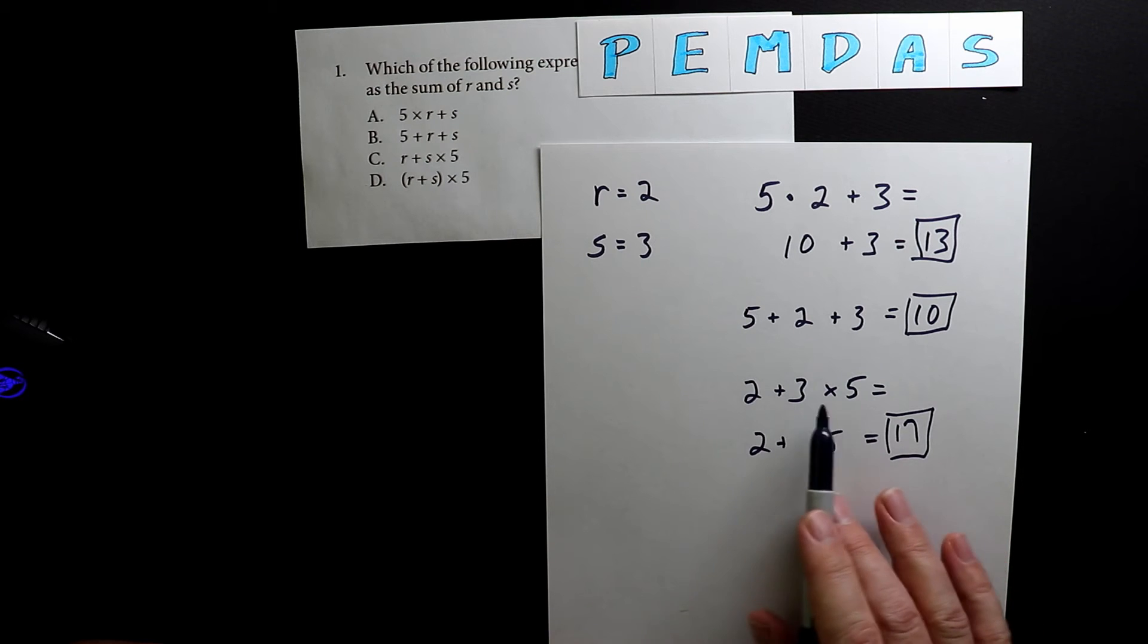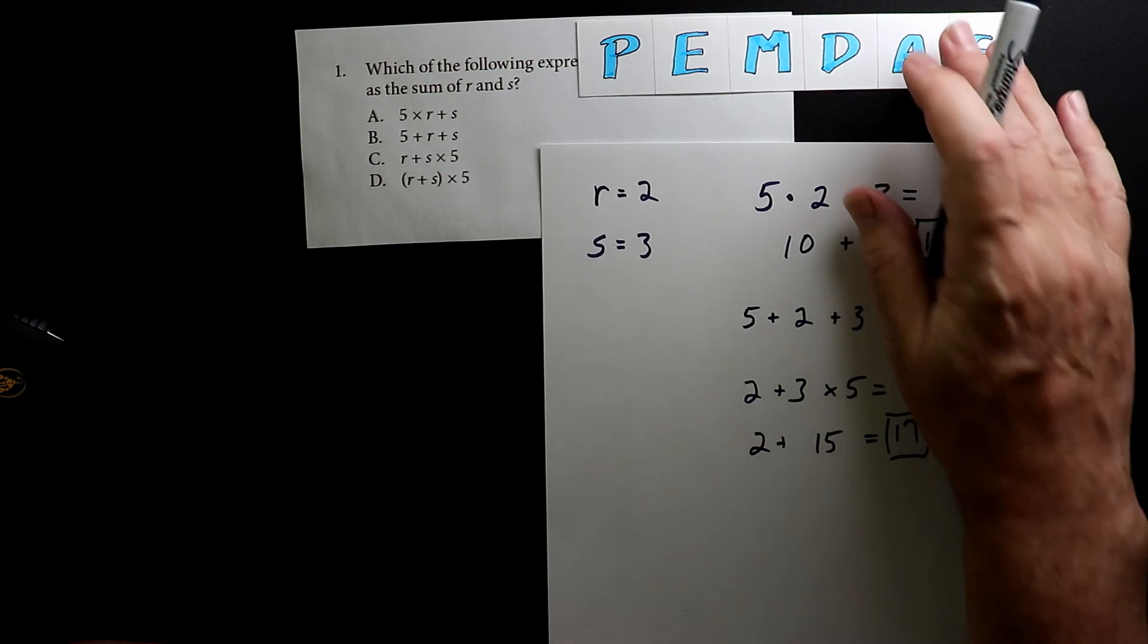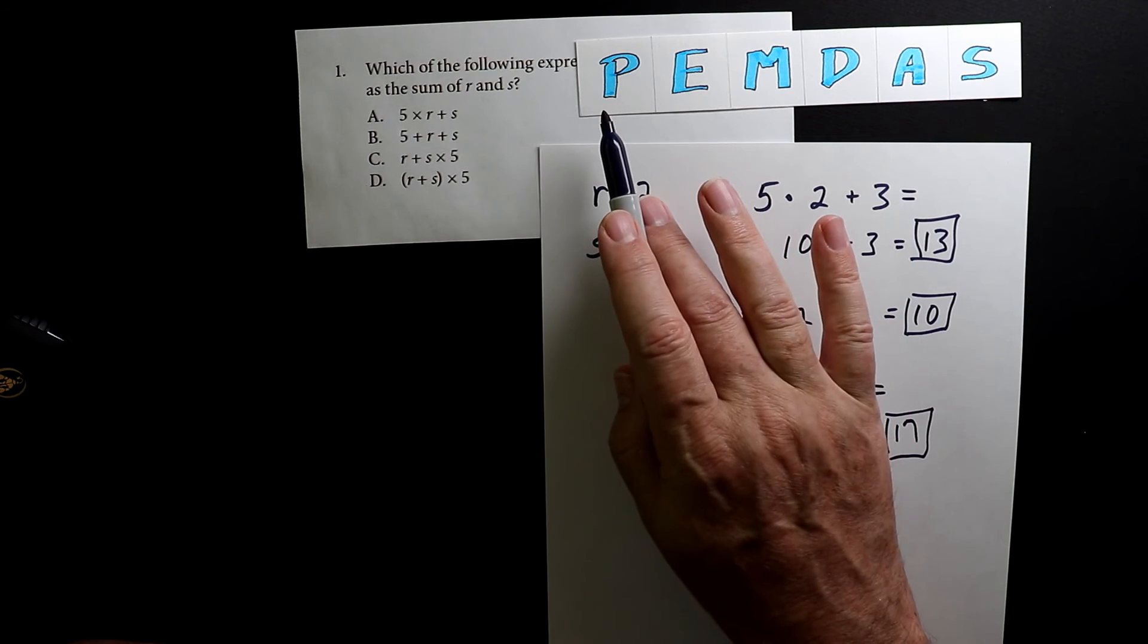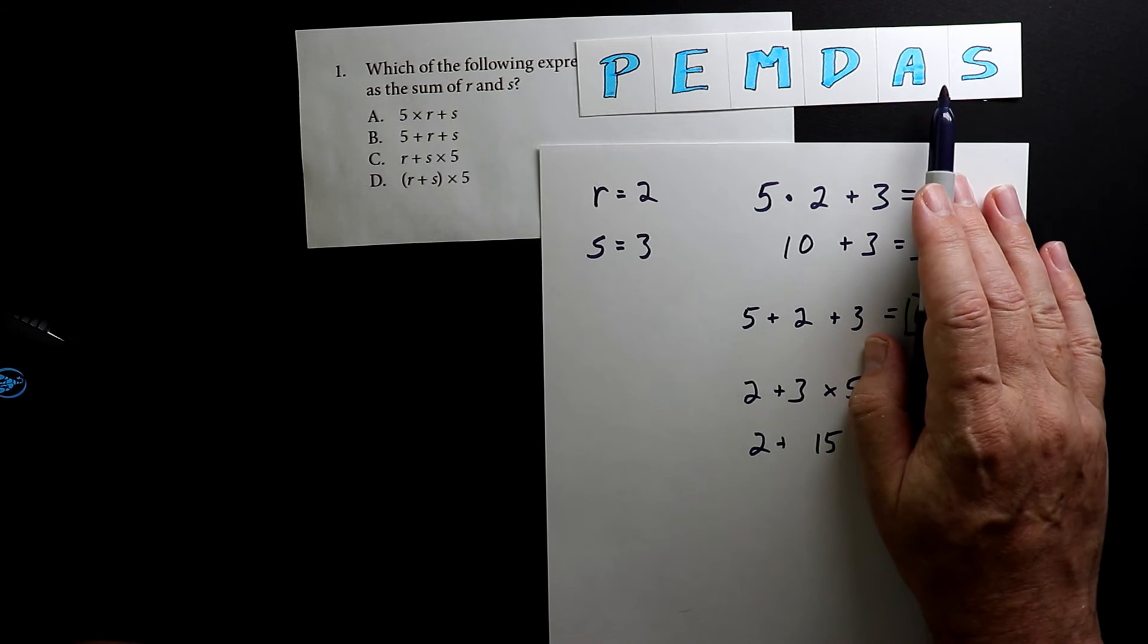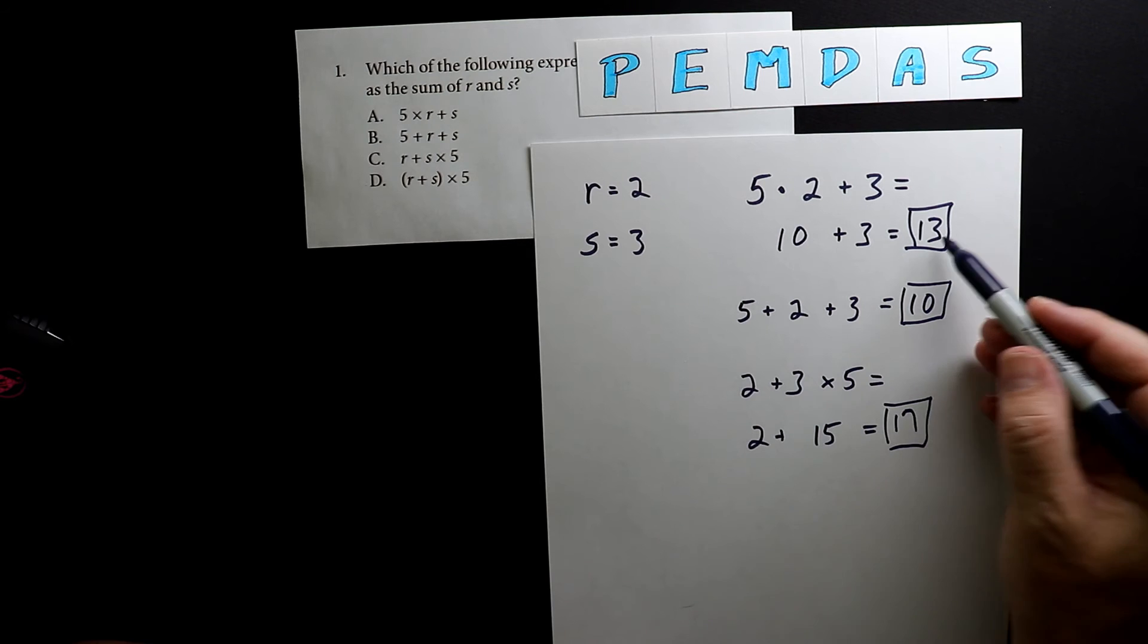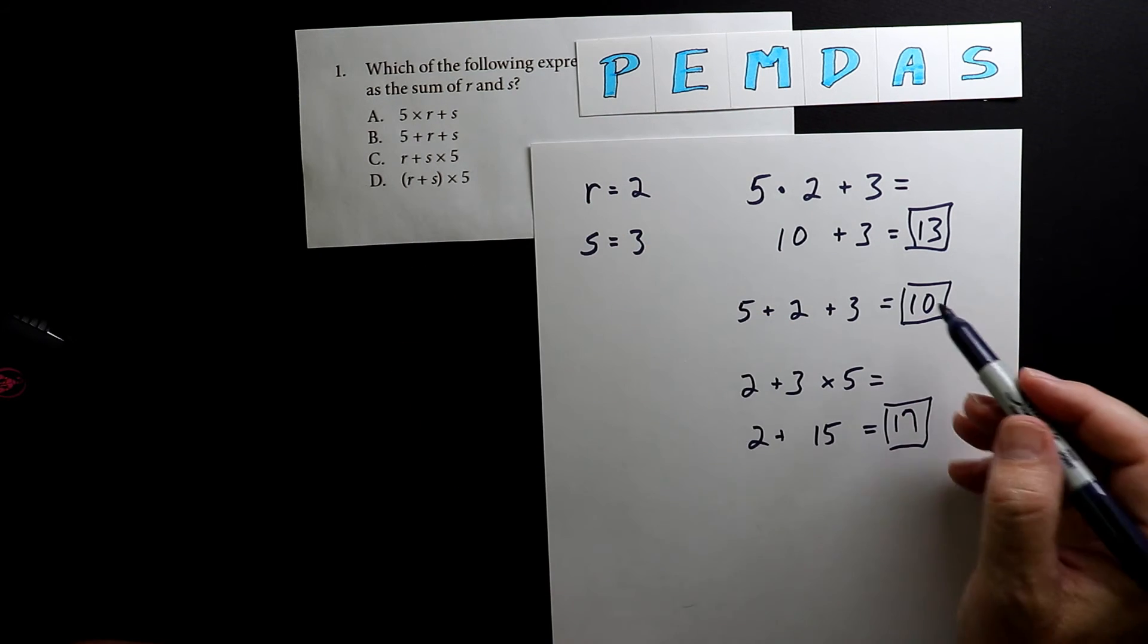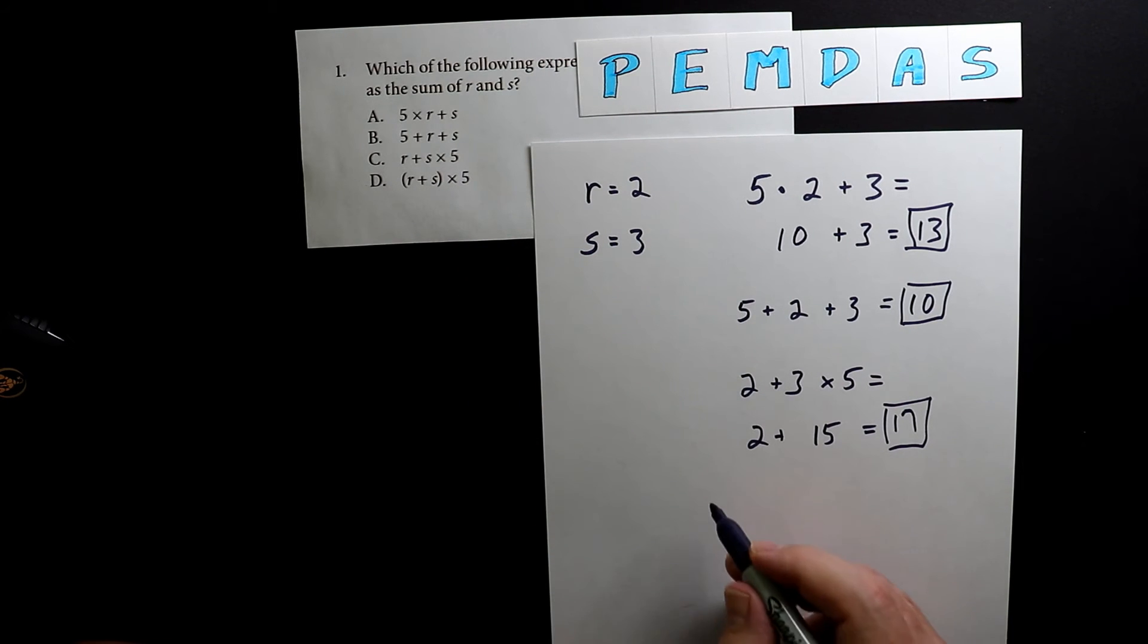The reason for these rules is they want people to evaluate every expression the same way. This is why they created the order of operations, so no matter who's doing the problem, they'll get the same answer. We have 13 for the first one, 10 for the second one, 17 for the third one. Let's do the last one.